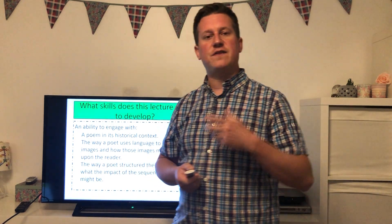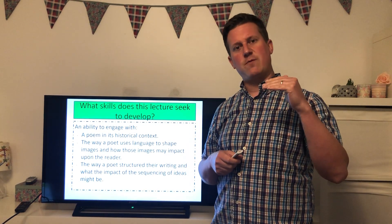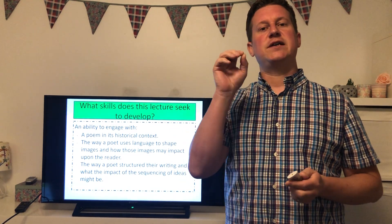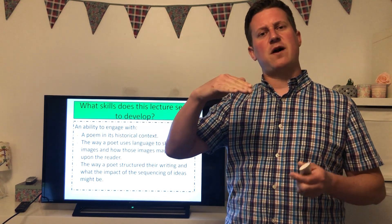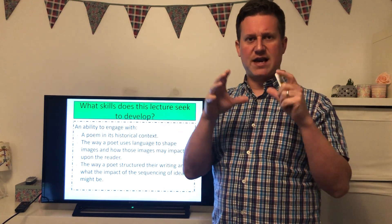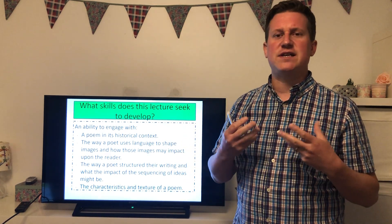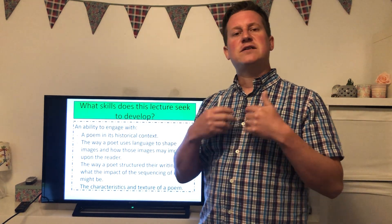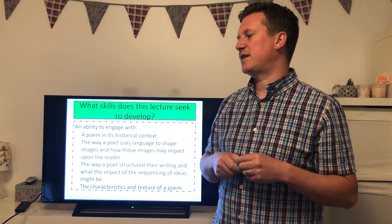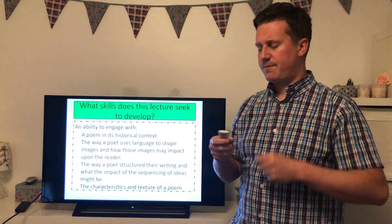We're also going to look at the structure of the poem. This poem has quite a strong structure — we can break it down into components, and that's the backbone of this lecture: looking at those different components and seeing how we can piece them together, and what the impact of having these clear sections is. Finally, I want us to think about the characteristics and texture of the poem — how the different techniques and strategies Armitage uses give the poem a texture and feel that is impactful upon the reader.